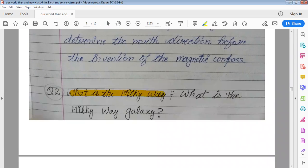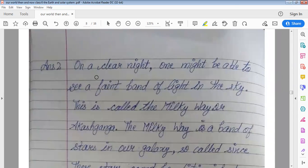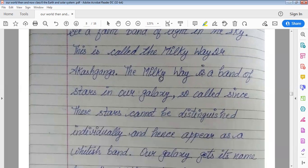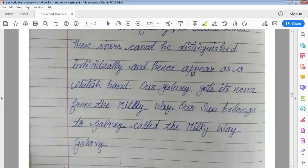What is the Milky Way galaxy? On a clear night one might be able to see a fanned band of light in the sky. This is called the Milky Way or Akash Ganga. The Milky Way is a band of stars in our galaxy so called since these stars cannot be distinguished individually and hence appear as a whitish band. Our galaxy gets its name from the Milky Way. Our sun belongs to the galaxy called the Milky Way galaxy.